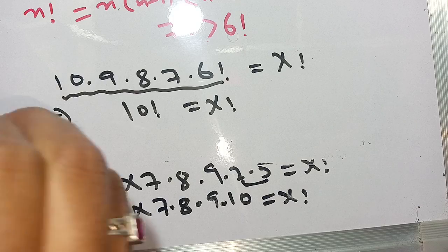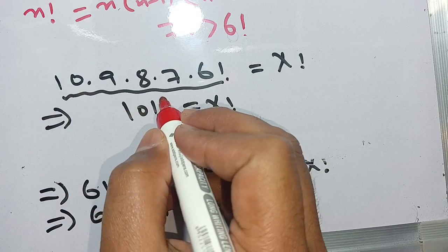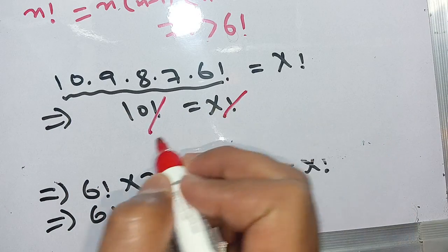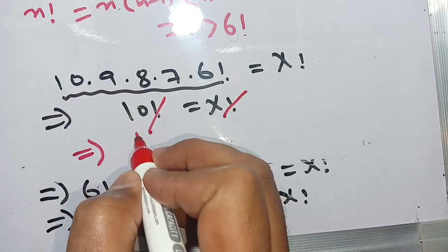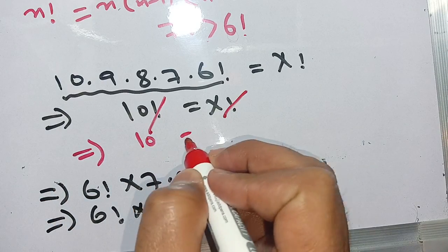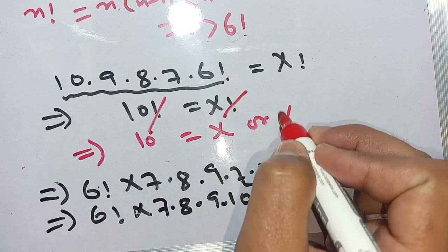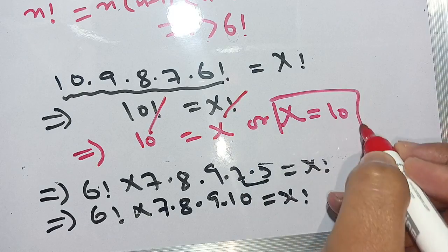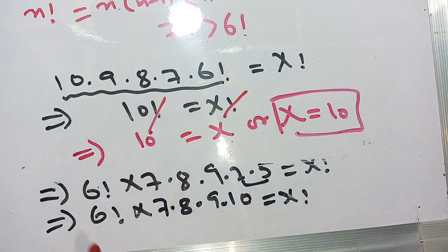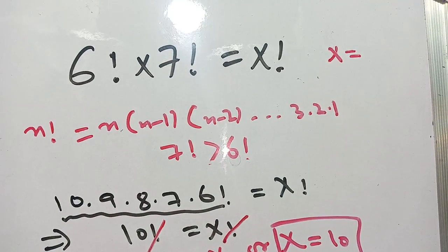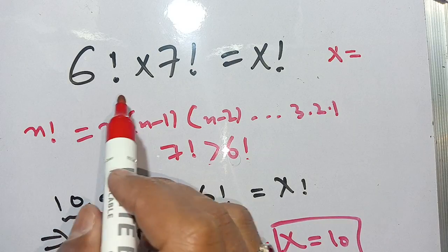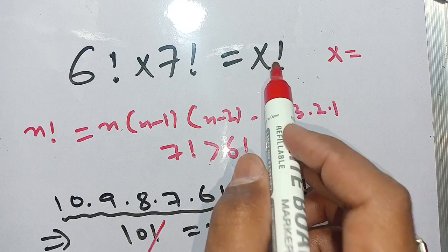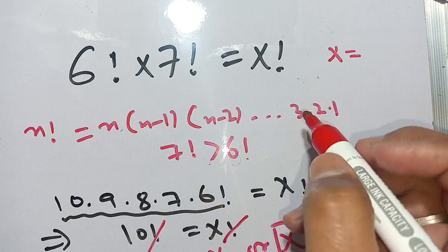From both the right-hand side and left-hand side, we cancel out the factorial, which implies 10 is equal to x, or x is equal to 10. Thus the value of x is equal to 10, which satisfies the equation 6 factorial times 7 factorial equal to x factorial.